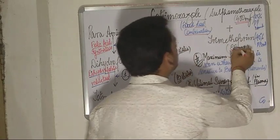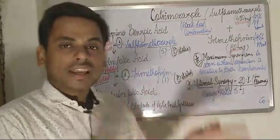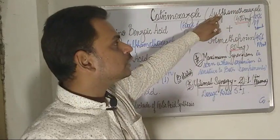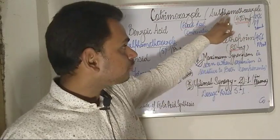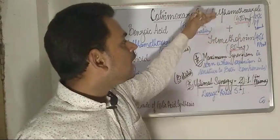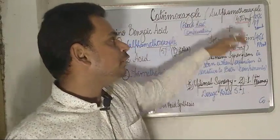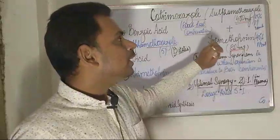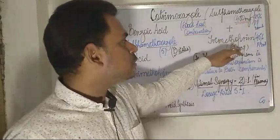Cotrimoxazole is a fixed dose combination involving sulfamethoxazole, an antibacterial drug, and trimethoprim, in the ratio of 400 milligram to 80 milligram — that is, a ratio of 5 to 1.